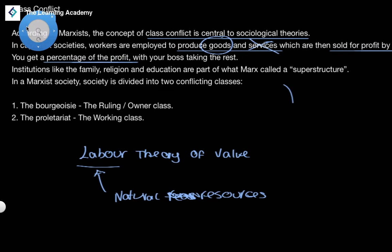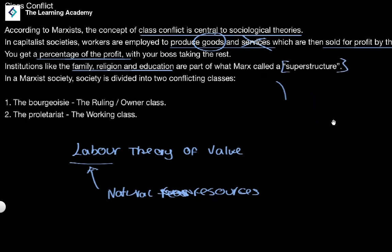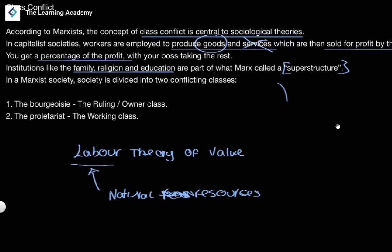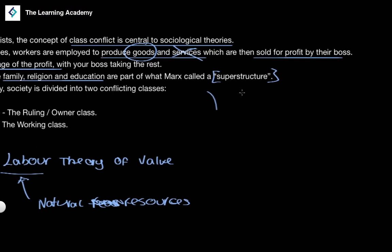Specifically relating to institutions of sociology, institutions like family, religion, and education are what Marx called the superstructure of society. Within this superstructure, capitalism — capital — influences and shapes that superstructure.